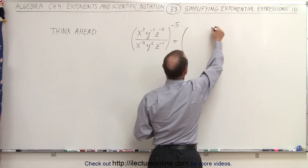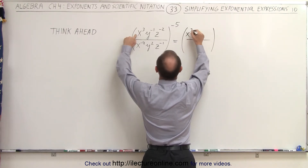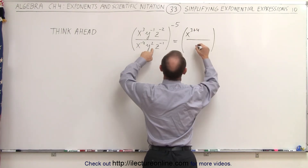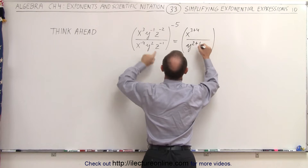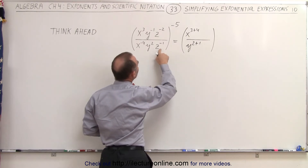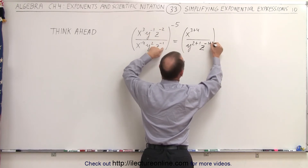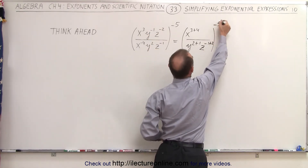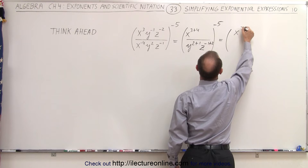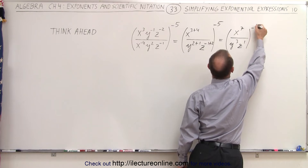So this then becomes as follows. We want x in the numerator, so this becomes x to the 3 plus negative negative 4, which becomes a plus 4. Here we have y to the 2 plus 1, because when we bring the negative 1 down it becomes a positive 1. The negative 4 brought up becomes a positive 4, and here we have z to the negative 1, but when we bring the negative 2 down it becomes a plus 2. And we can't forget the negative 5 out front. So when we simplify, this is equal to x to the 7th divided by y to the 3rd and z to the 1st power, all to the negative 5 power.